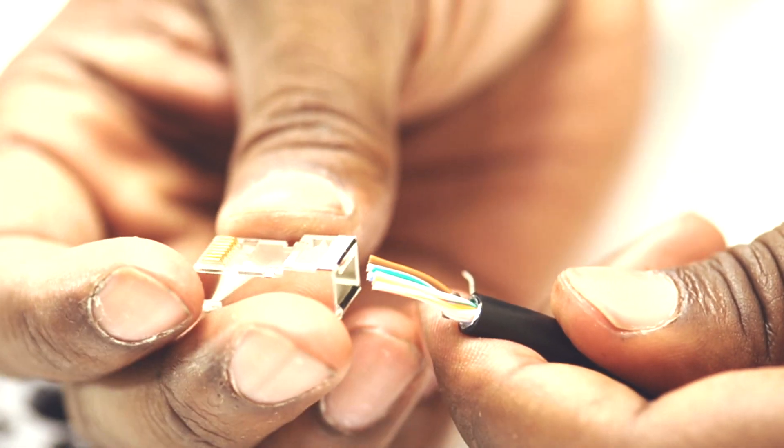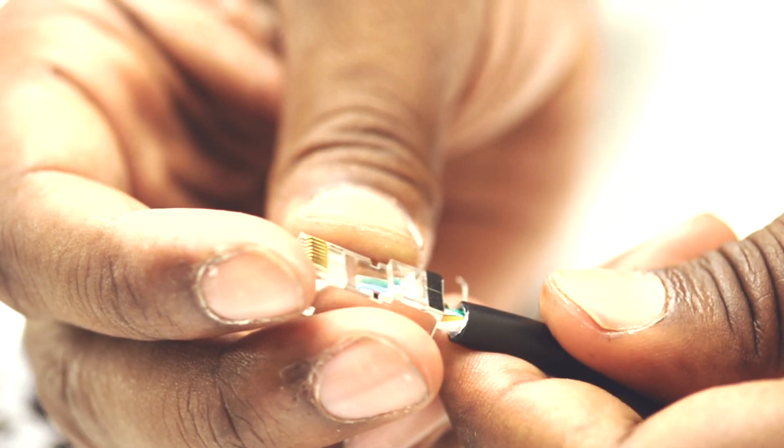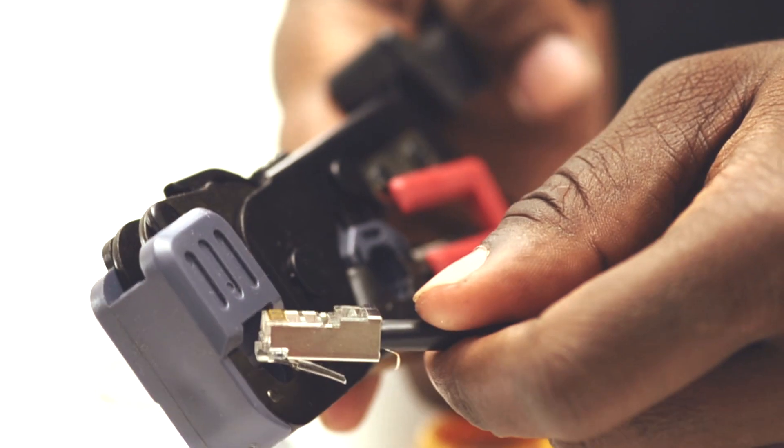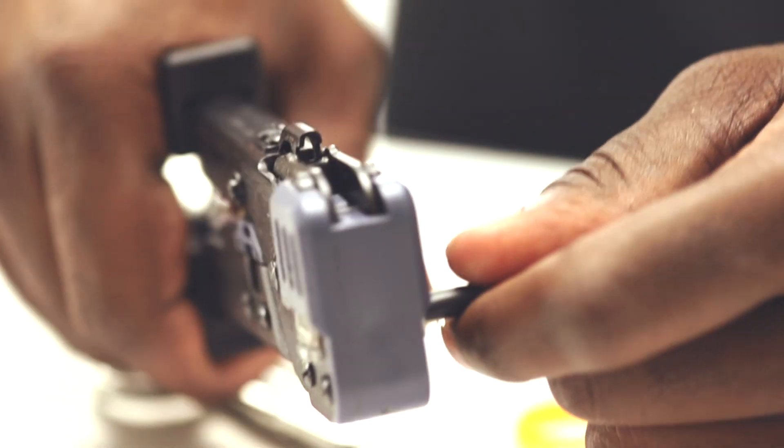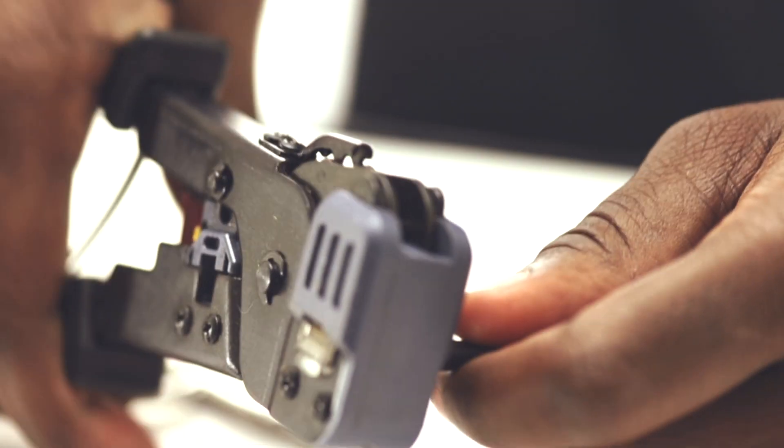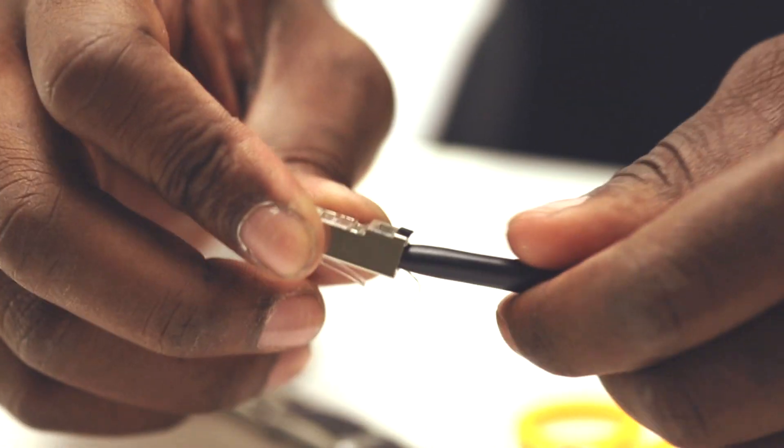Now slide on your RJ45 connector. Insert it into the crimp tool and crimp it down. This pinches the connector on the jacket. Trim back any exposed drain wire.